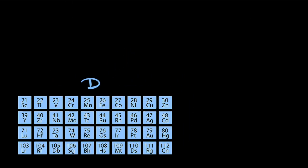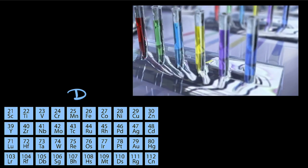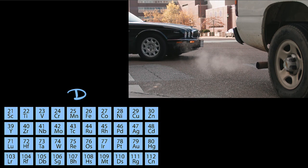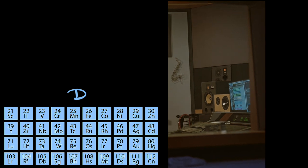D-block elements produce the most colored and vibrant stuff. So while some are used in creating paints and dyes, others help reduce harmful gases from vehicles.